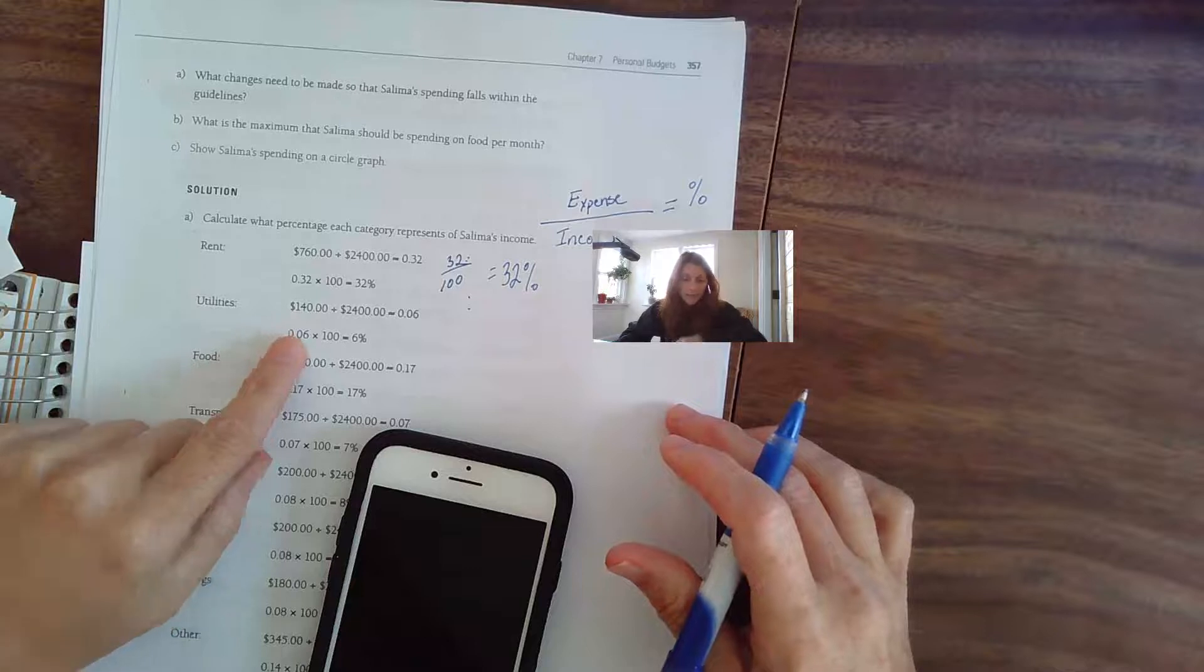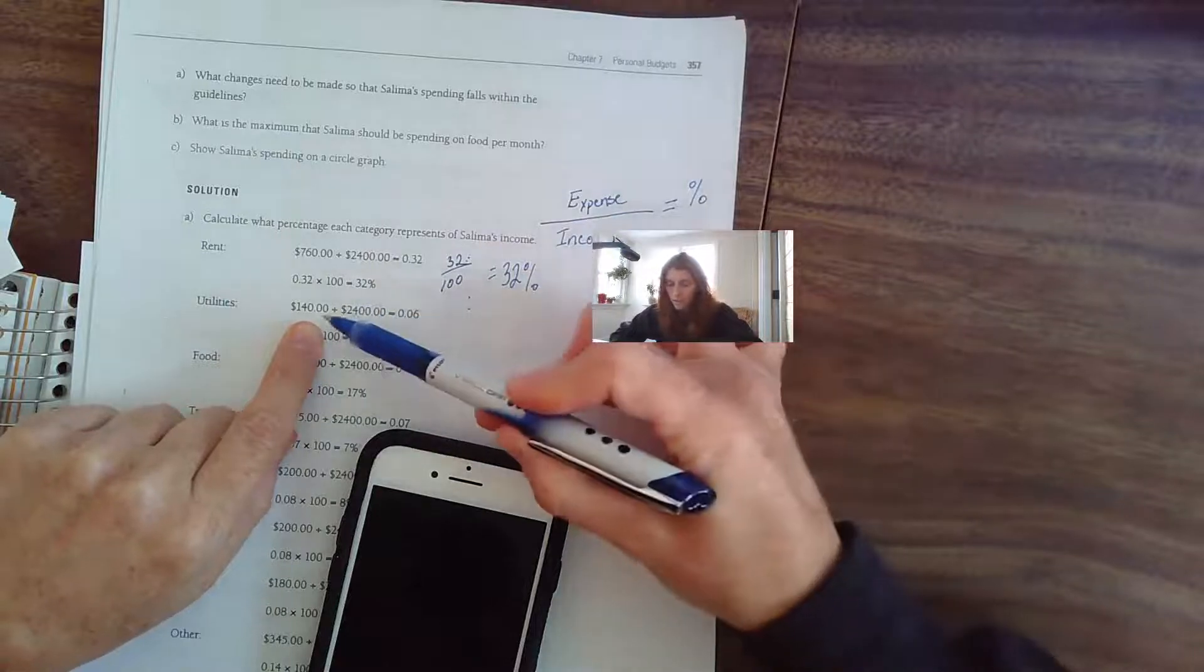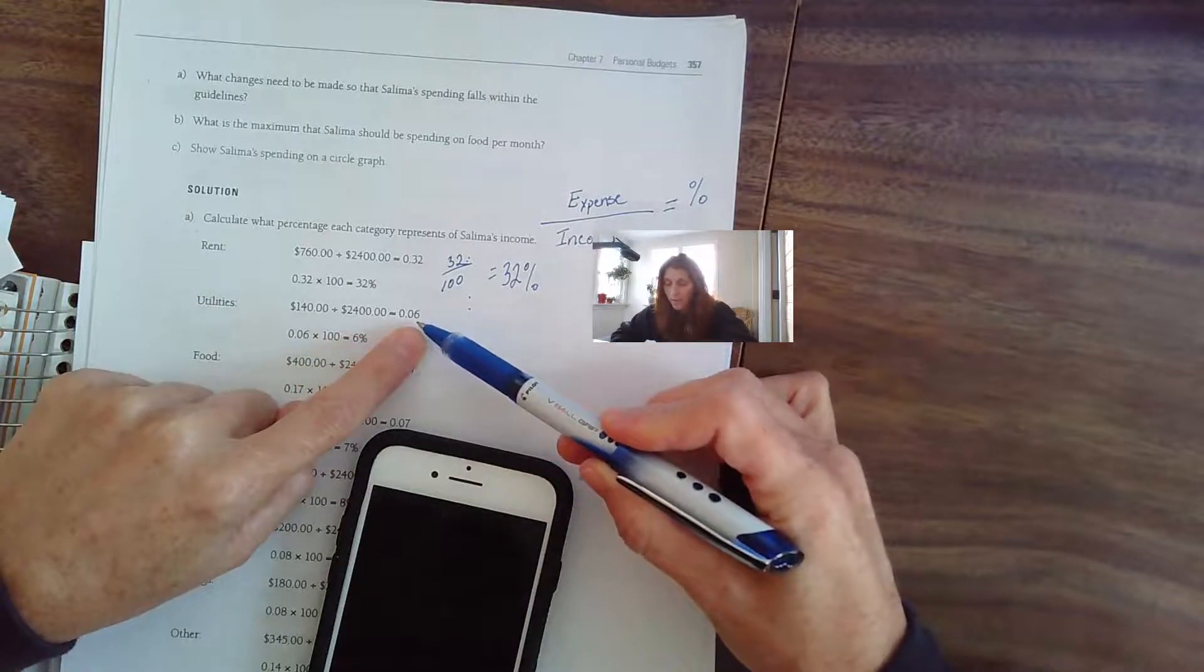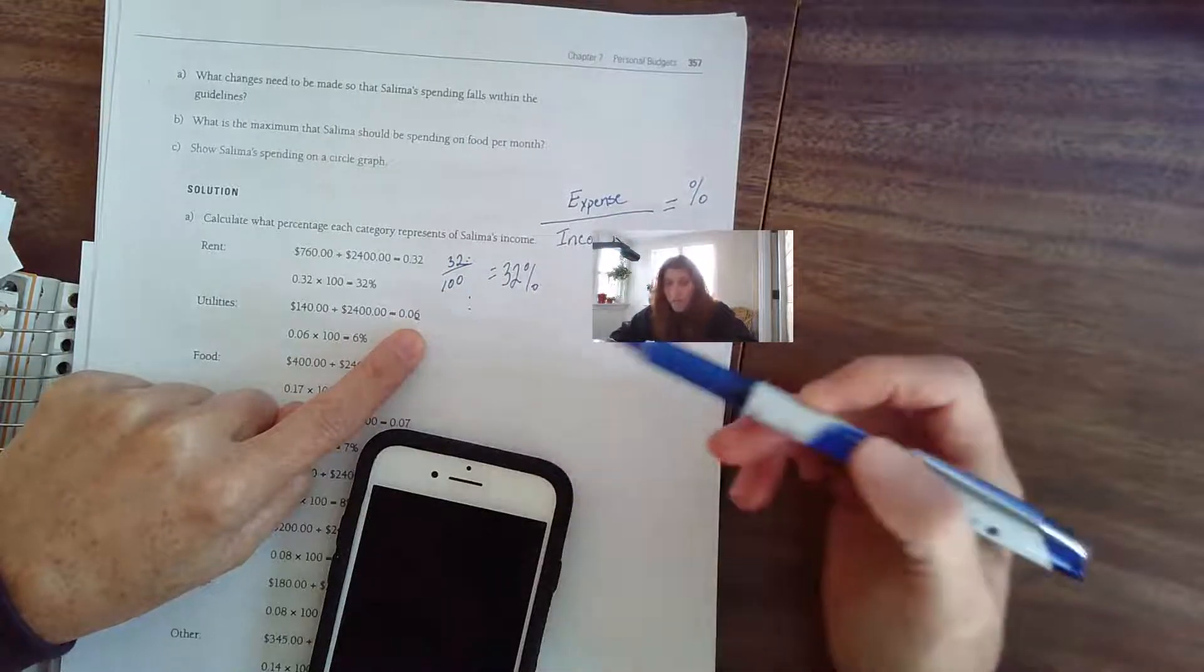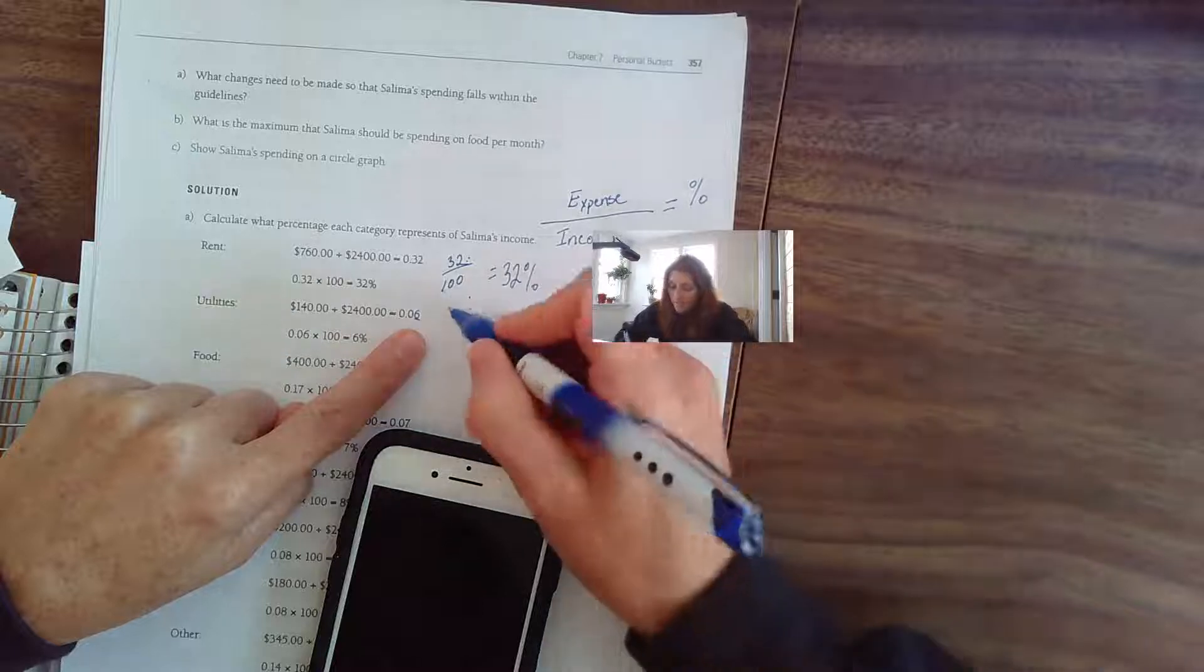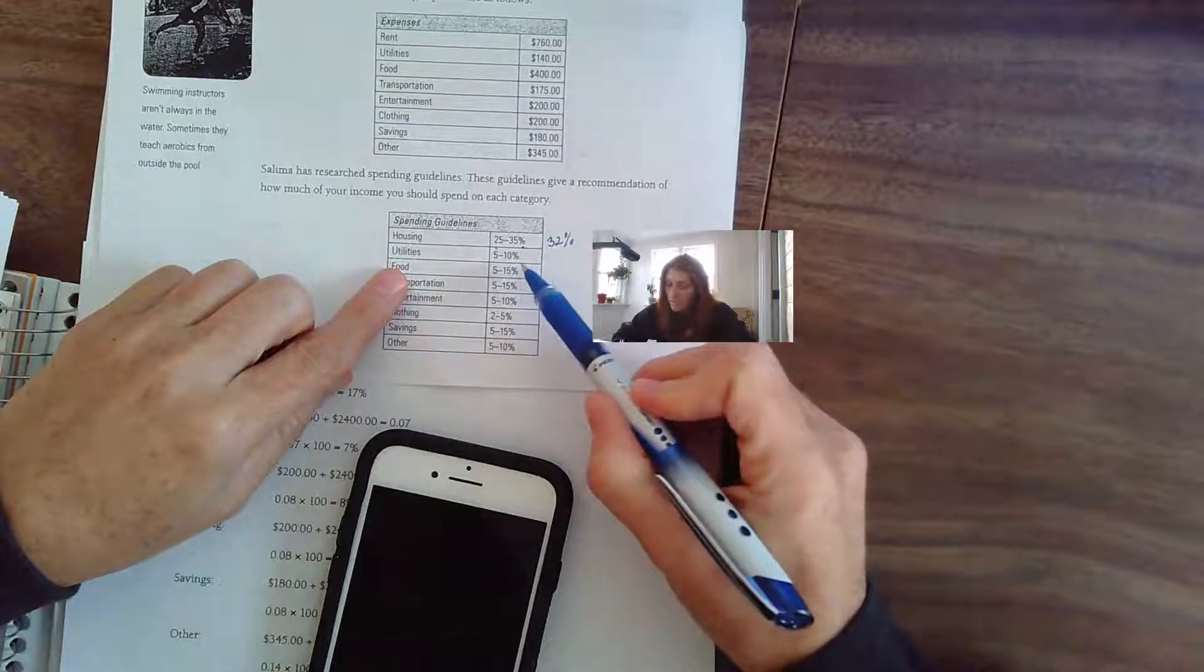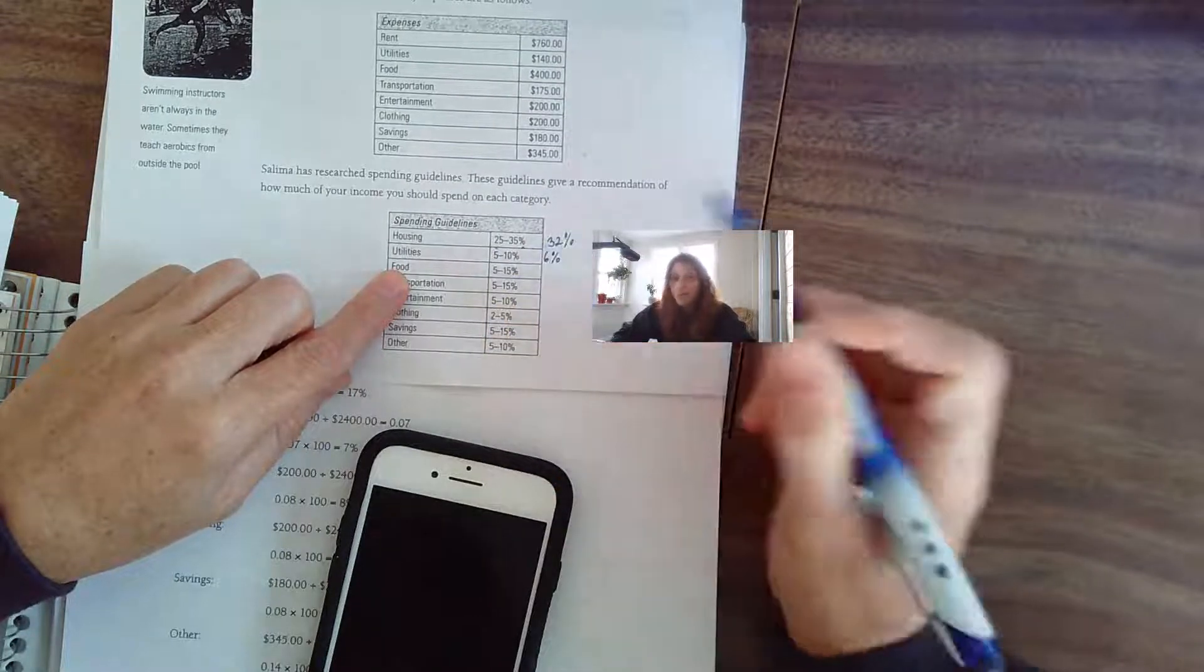Her utilities—again, use this formula. Expense, how much did it cost? $140 divided by your income, $2,400. What do we get? 0.06. This six is in the hundredths place value. It's 6 out of 100, so it's 6%. Utilities, she was spending 6%. We look at the chart. Utilities, 5% to 10%, so she's doing okay with those two—low end of utilities, high end of housing though.